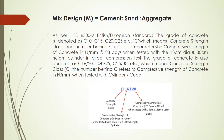The grade of concrete is also denoted as C16/20, C20/25, C25/30, etc., where C means concrete strength class and the numbers after C refer to compressive strength of concrete in N/mm² when tested with cylinder or cube respectively.